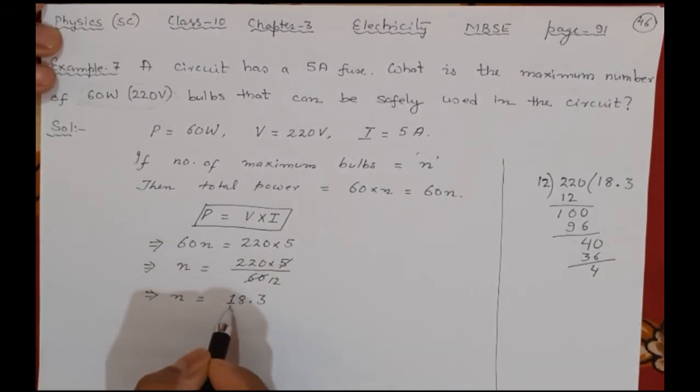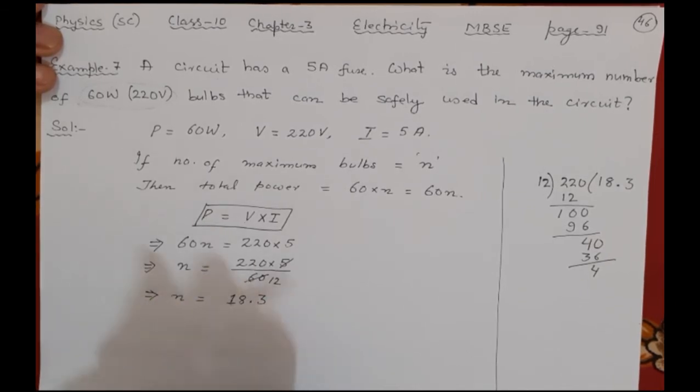So this means 18.3. So how many numbers I can use? 18. That is okay. But I cannot use 19. You understand? Less than 19. I have to use less than 18, because 18.3 is not a number of bulb.